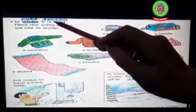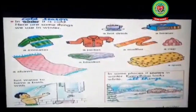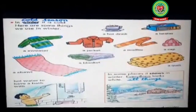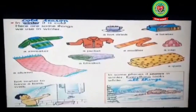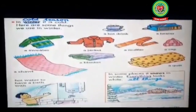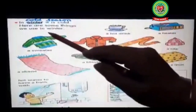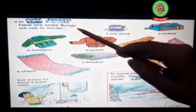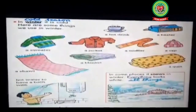Let's read: in winters it is cold. Underline 'winter', write down 'cold season'. Children, in winter season cold and chilly winds blow. Its months are November, December, and January. December is the coldest month.